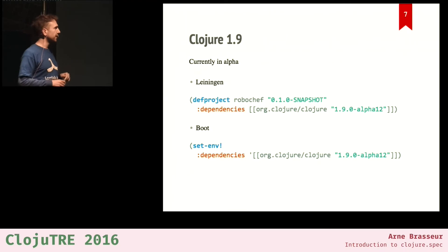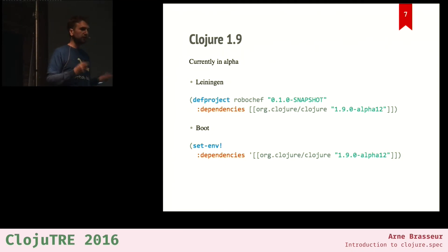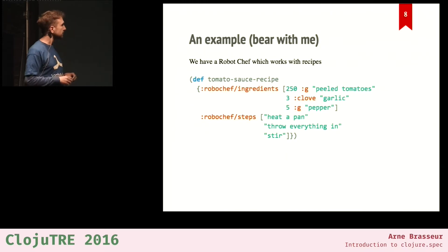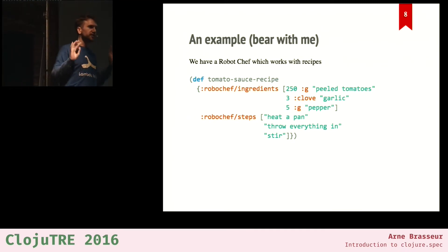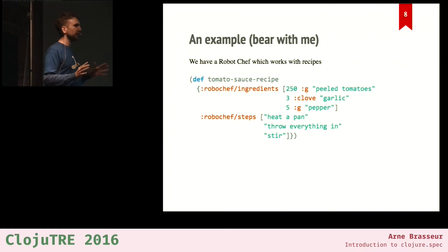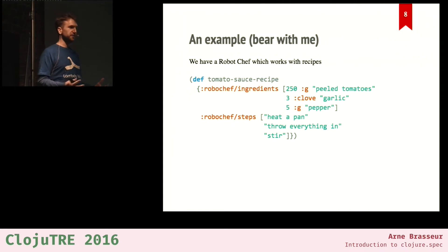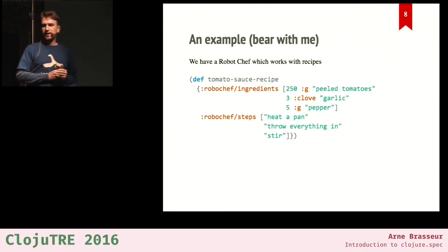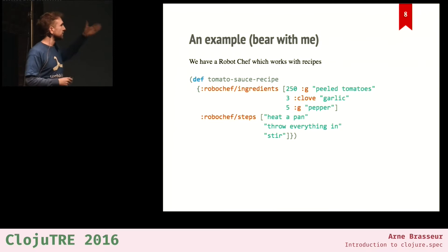Clojure 1.9 is at alpha 12 at the moment. You can put this in your project.clj or build.boot and all the code I'm showing you, you can try out today. Throughout this presentation I'm going to use a running example of a robot chef — a buzzword-compliant Internet of Things device that pulls recipes from the cloud and turns them into delicious meals.